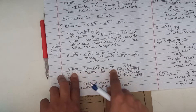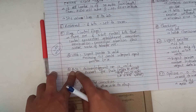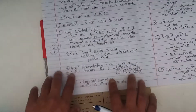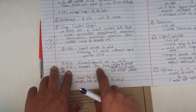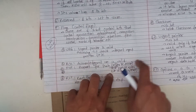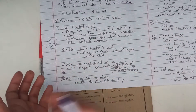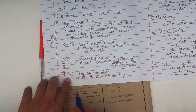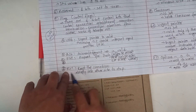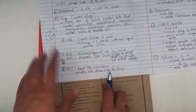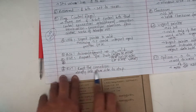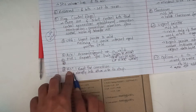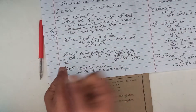The ACK flag indicates the acknowledgment number field is valid. The PSH flag is a request for push — the sender and receiver handle push requests. The RST flag is used to reset the connection, which abruptly tells the other side to close. If you need to reset, the connection is set.